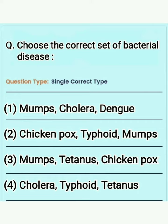The fourth option is cholera, typhoid, and tetanus. Cholera is caused by the bacterium Vibrio cholerae, typhoid by Salmonella typhi, and tetanus by Clostridium tetani. All three are bacterial diseases. Therefore, the correct answer is the fourth option: cholera, typhoid, and tetanus.